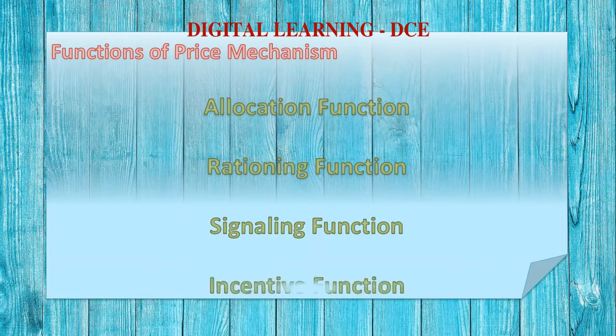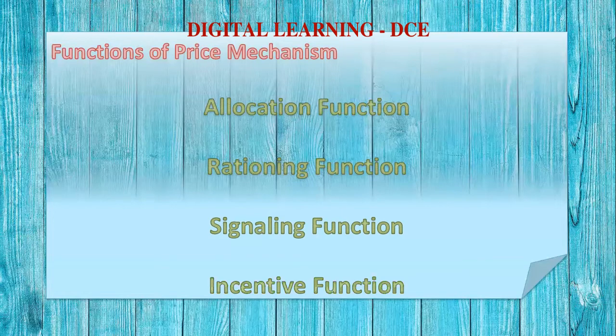The last function is the incentive function. This gives business units an incentive regarding what to produce and what not to produce. Businesses are in the market to make profits, and price is one of the elements through which they earn profit. Hence, price is an incentive to producers to start or stop production. These are the four functions of price mechanism.